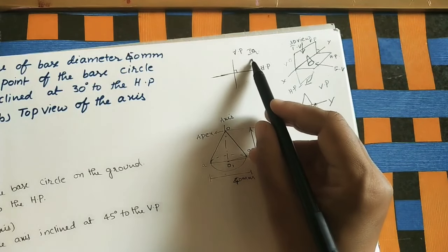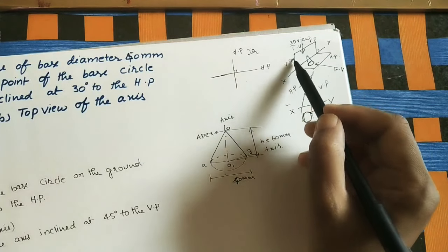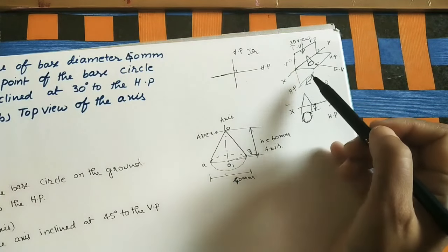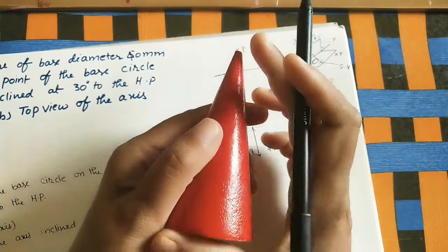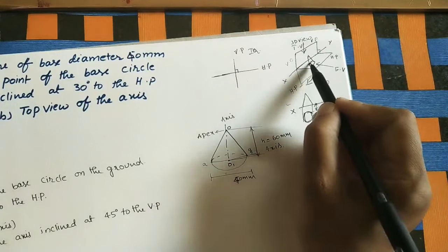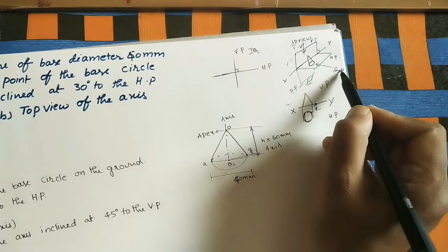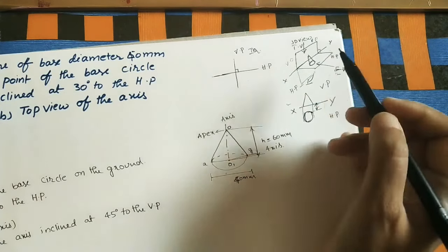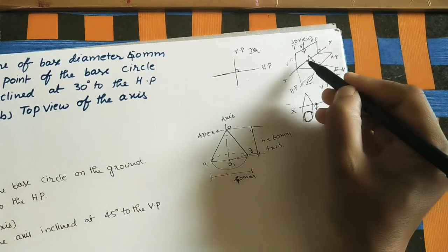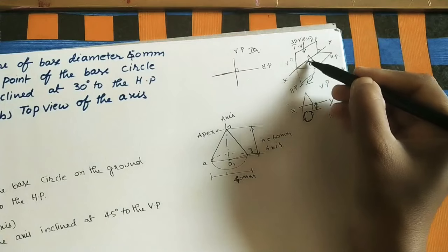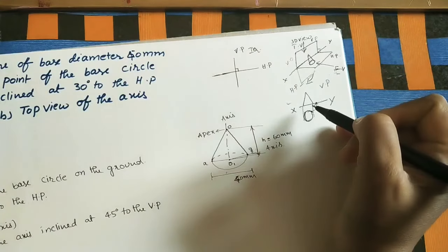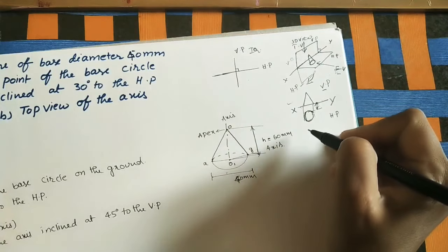We keep all solids in the first quadrant. This has a vertical plane and a horizontal plane joined by the XY line. The front view (FV) shows how the cone looks from the front — it appears as a triangle in the vertical plane above the XY line. The top view shows the cone from the top — it appears as a circle on the horizontal plane.